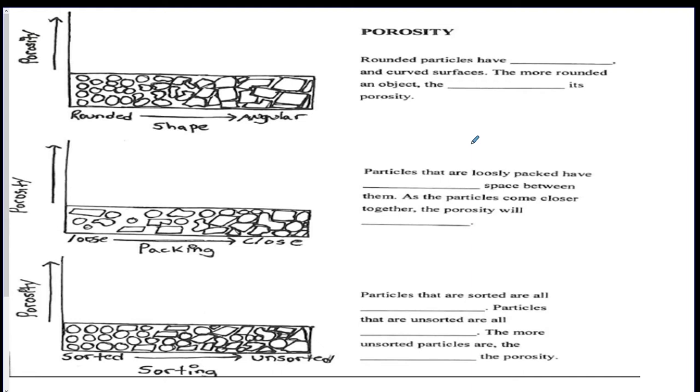These are first questions about porosity, which goes with the last video. So we're going to see how much to remember and then build on this. Rounded particles have blank and curved surfaces. I would say maybe like sharp, jagged. The more rounded the object, the blank its porosity. The higher the porosity. Remember that the angular ones fit together really well and don't allow the water to really have any space. Porosity means space. Particles that are loosely packed have more space between them. As the particles come closer together, the porosity will decrease because porosity is the amount of space. So if you have particles coming closer together, it will get smaller.